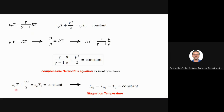CpT plus V²/2 is the stagnation enthalpy, which is constant. For all conditions, the stagnation conditions will be the same for isentropic or adiabatic flow. So the stagnation temperature will be constant. For any point in the flow — subscript 1, 2, or any other — CpT plus V²/2 gives the stagnation enthalpy at that point, and the stagnation temperature is the same for all points in the flow.